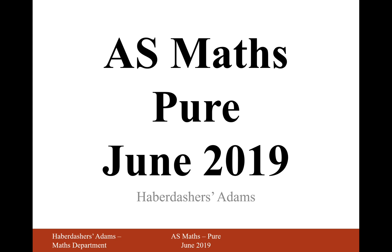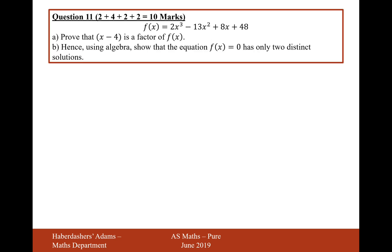Hello there and welcome to the 2019 paper. Here we're looking at question 11. In the first part, prove that x minus 4 is a factor of f of x. What we're looking to do here is plug in the value of 4 into the function and use the factor theorem.